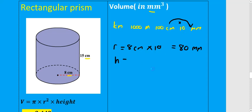We have a height of 15 centimeters. But remember the question wants the volume in millimeters cubed, so we convert that 15 centimeters to millimeters. 15 times 10 will give us 150 millimeters.